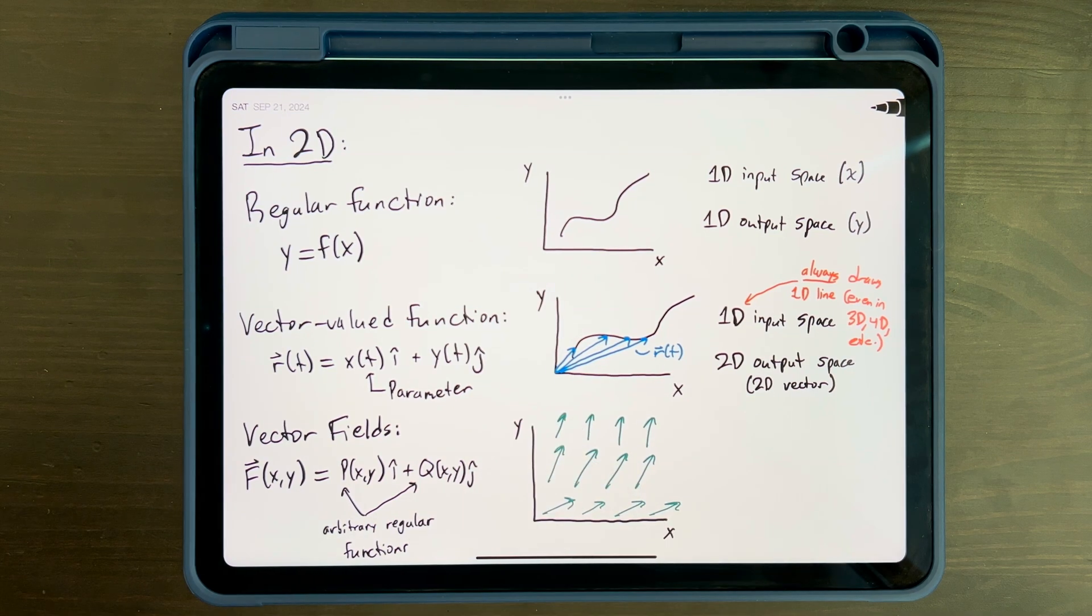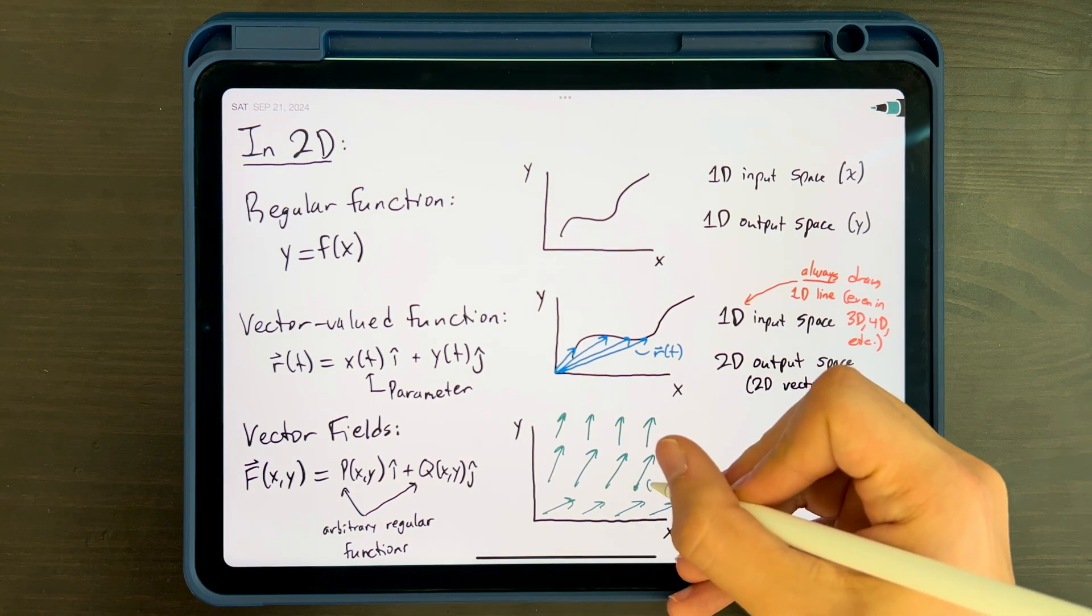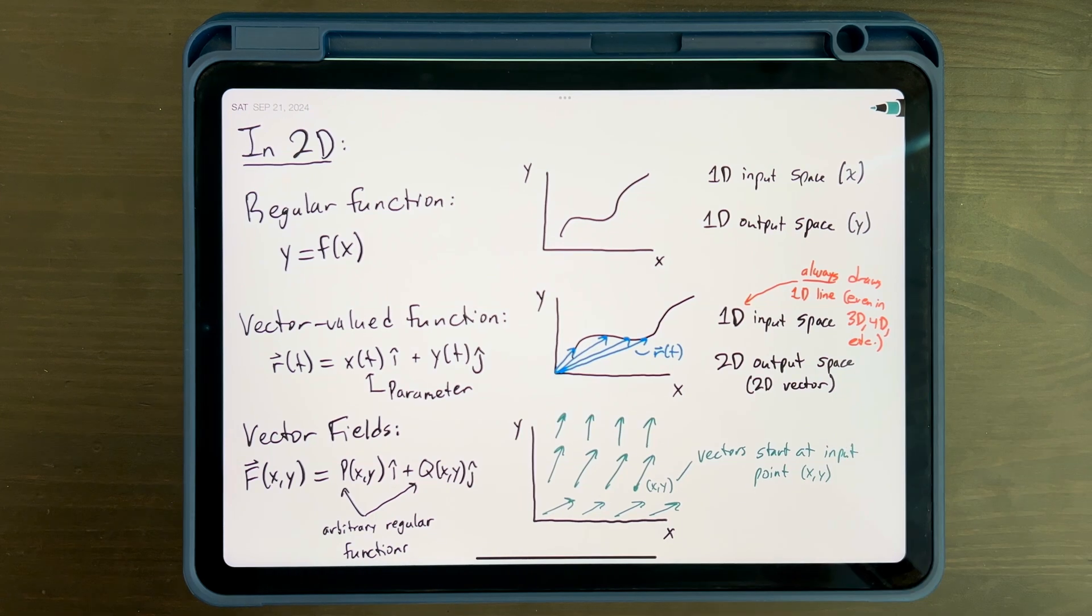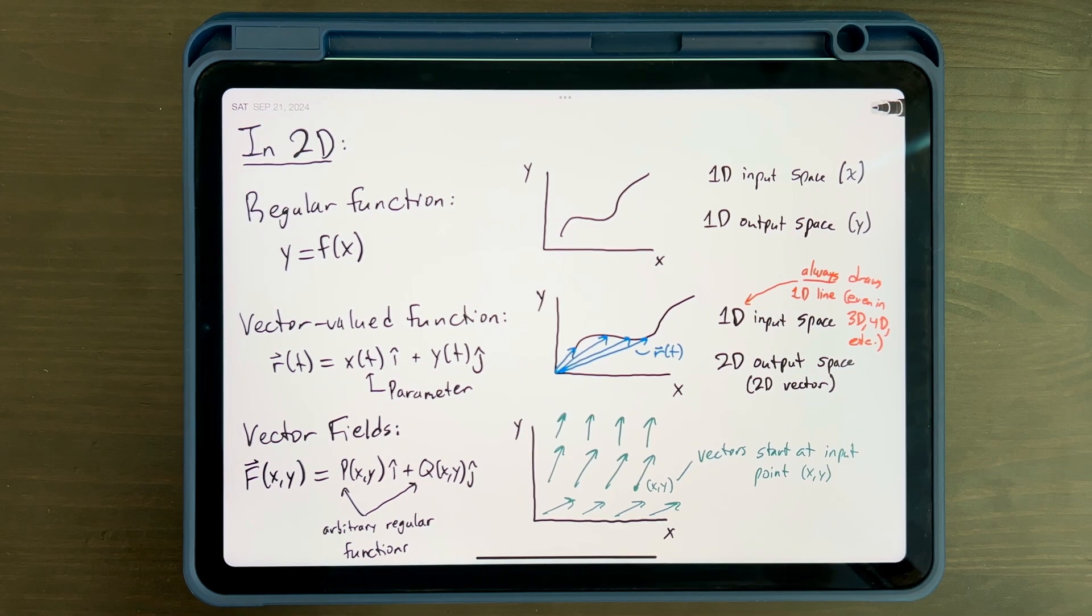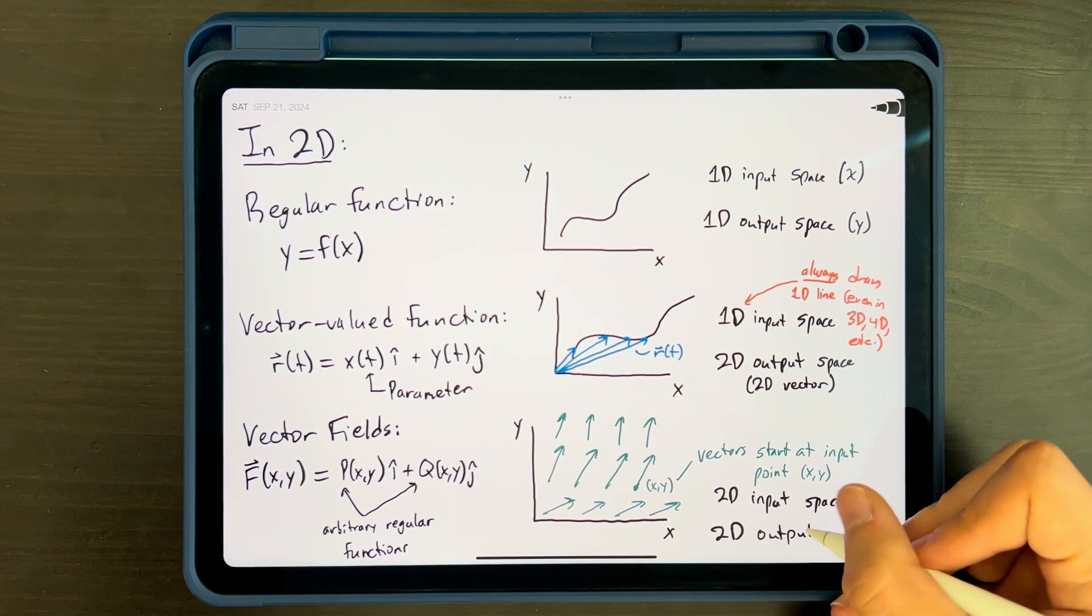Notice that we have arbitrary functions of x and y, which are denoted here as p and q, which are multiplied by i hat and j hat unit vectors. Except now, these vectors don't start at the origin, but at their input point, x comma y. Effectively, this 2D vector field has a 2D input space and a 2D output space.